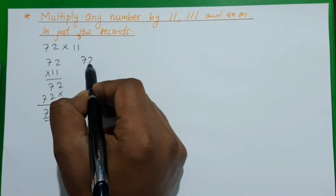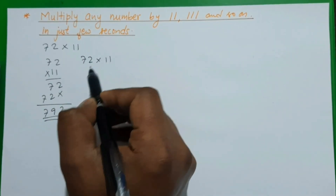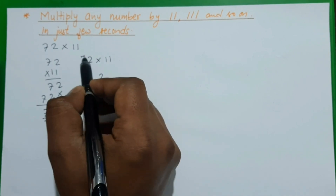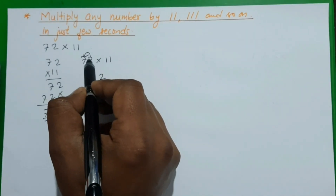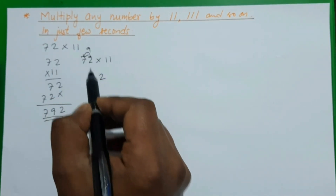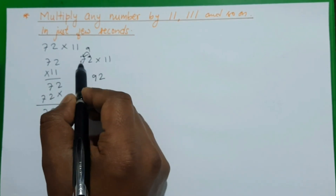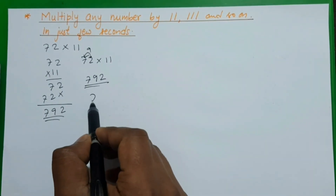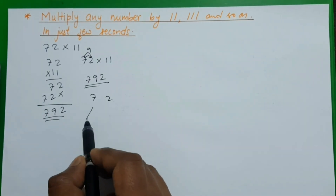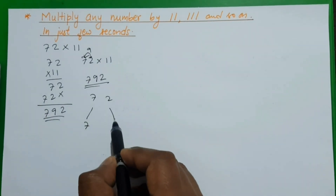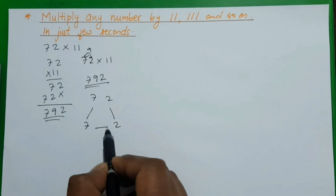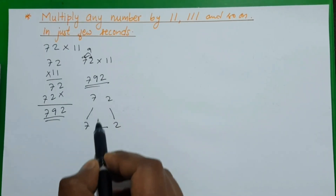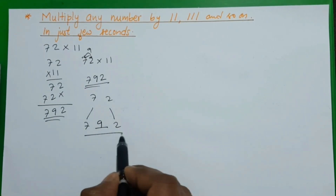Now in our short method for 72 × 11: first we write 2 in the ones place, then we add the two digits — 2 plus 7 is 9 — and place that in the middle, then write 7 at the front. So we put 7 as-is, 2 as-is, and in between we add 7 plus 2 = 9. Our product is 792.